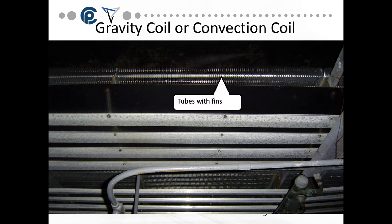A gravity or convection coil has tubes with fins and drain pans underneath. We need drain pans because humidity accumulates on the tubes and has to drip somewhere. Those drain pans have to be kept clean and must take moisture out, or there will be a puddle on the floor — sometimes ice.